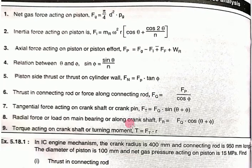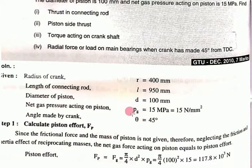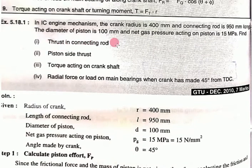Today we'll discuss an example of forces acting on the IC engine mechanism. Given: crank radius is 400 mm, connecting rod length is 950 mm, piston diameter is 100 mm, and net gas pressure acting on piston pg is 15 MPa = 15 N/mm². Find the thrust in connecting rod, piston side thrust Fn, torque, and thrust in crankshaft.